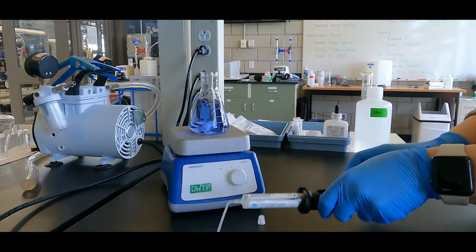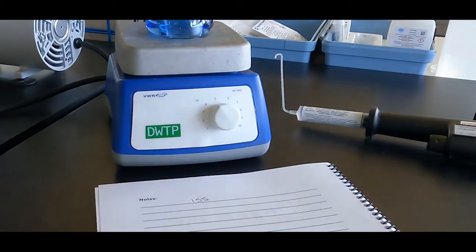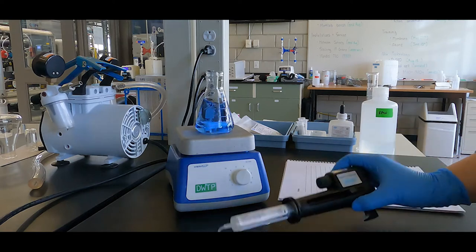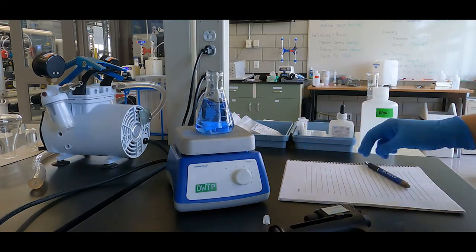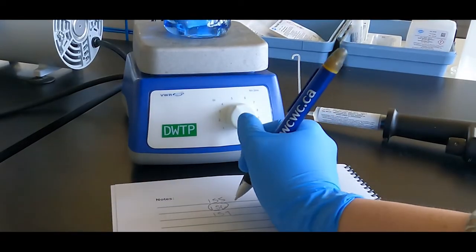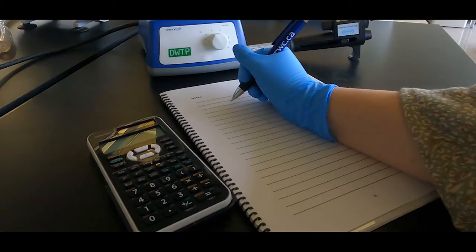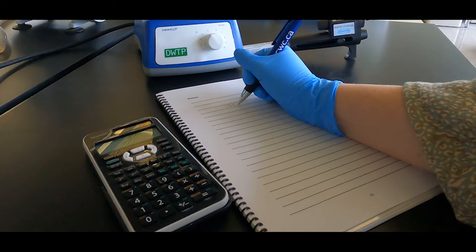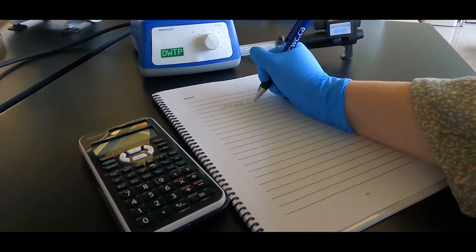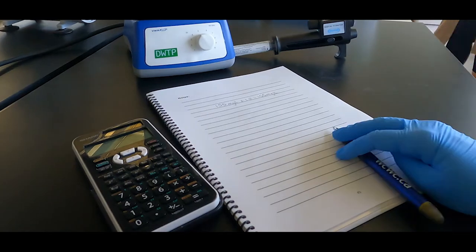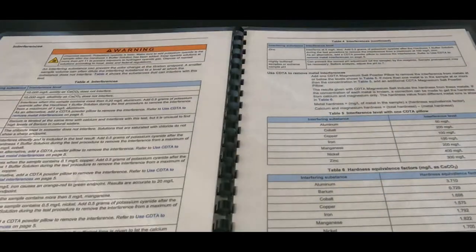If you are unsure of your endpoint, you can write down the value on the digital titrator counter and then keep titrating. If you've overshot the endpoint, you can revert back to your last number as your true endpoint. Record the value displayed on the digital titrator. Use the multiplier in the table to calculate the concentration of total hardness in milligrams per liter of calcium carbonate.